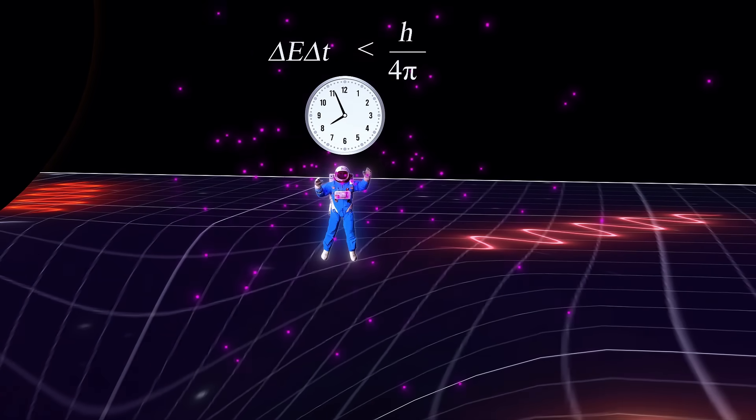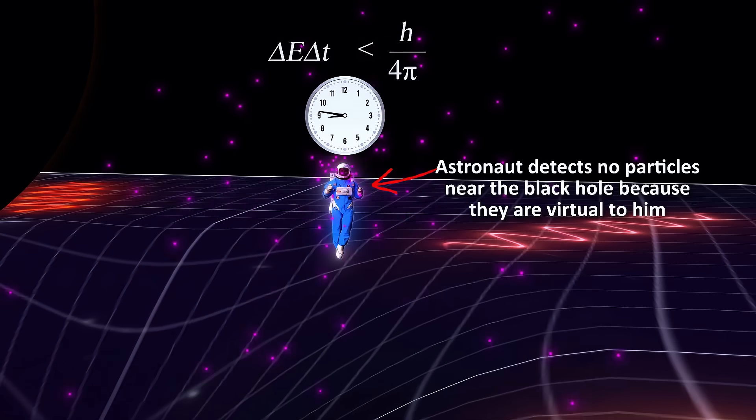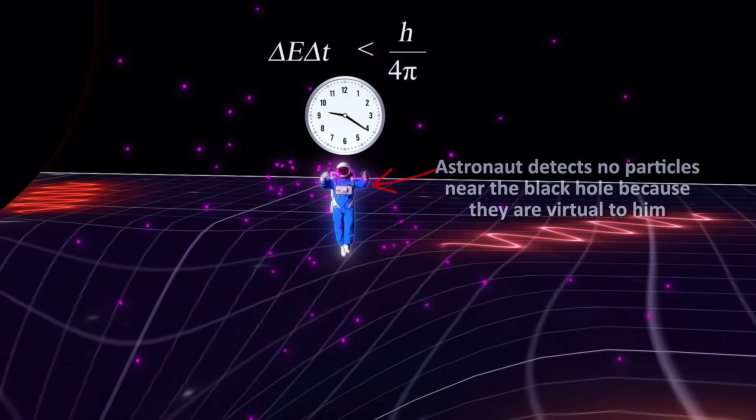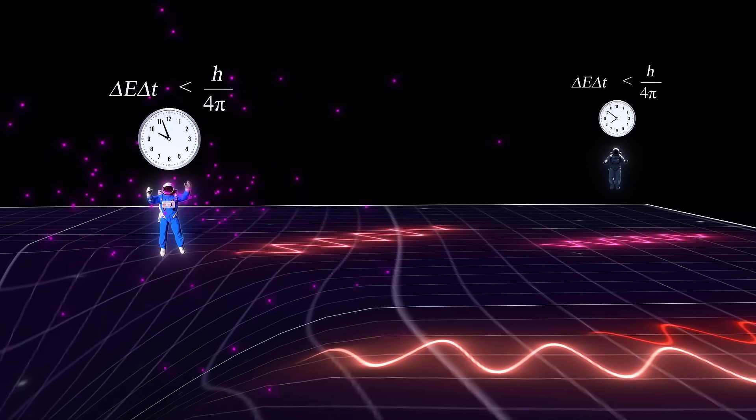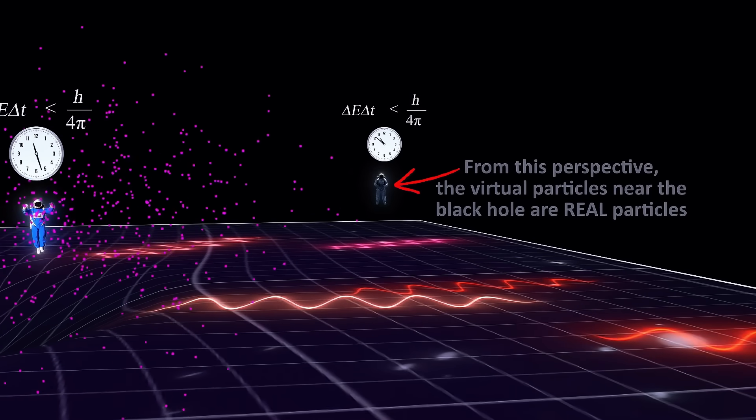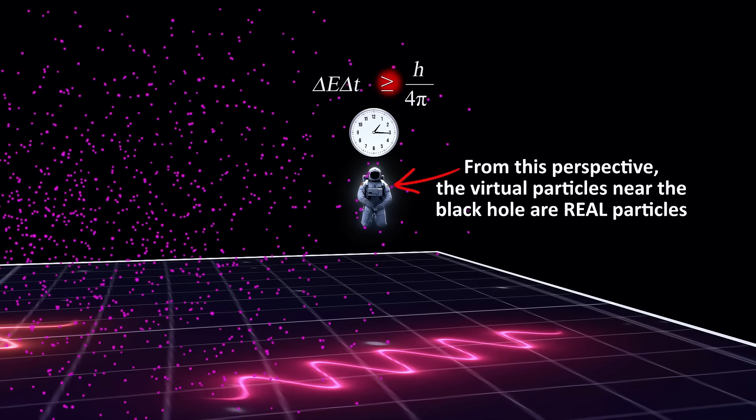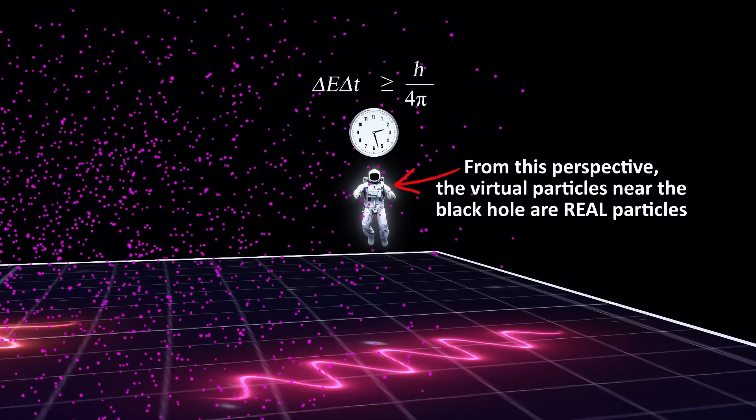To the local observer near the black hole, he will not be able to detect any particles because they will all be virtual to him. But for someone observing the black hole from far away, he will see something quite different, coming from the same location. He will detect real particles. How is this possible?